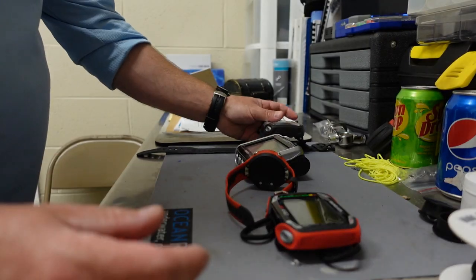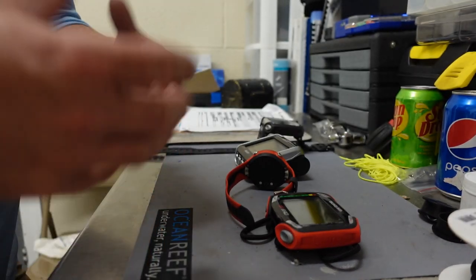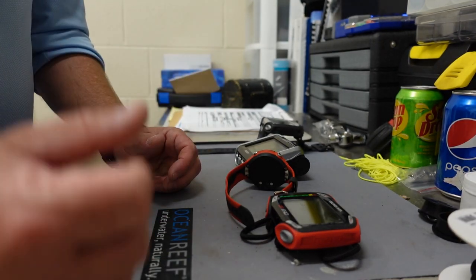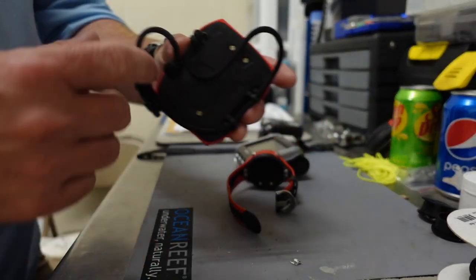So one of the things I like is a depth-compensating system. So as I go deeper and my suit compresses, I want that computer or watch to get tighter. And as I come back out or come back to a shallower depth, as it expands out, I want it to stretch so it's not too tight on me. And that's where the bungees come in.